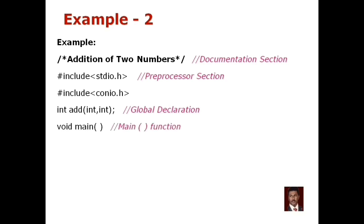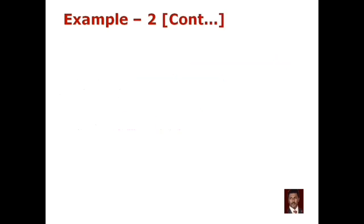The next section is the main function. We have a return type void. The main function is written with a beginning section marked by a left curly brace. The main function starts and then we have a local declaration. We add two numbers, so we have two integer variables: a and b.